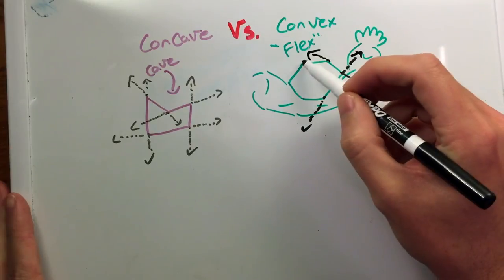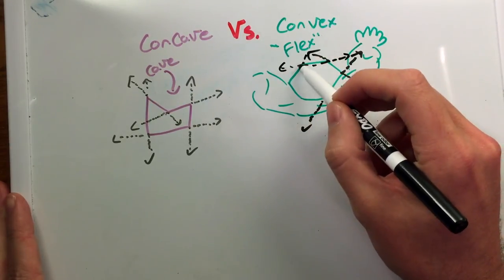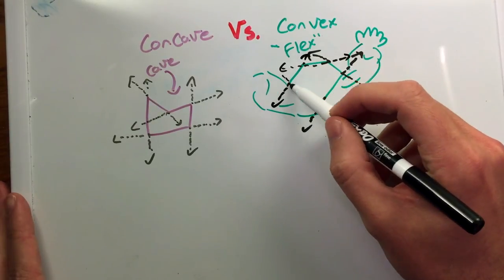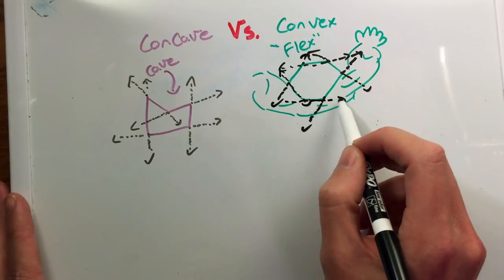inside of the polygon. And then we can know that we have a convex polygon.